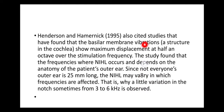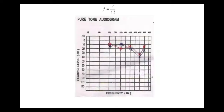But generally, in noise-induced hearing loss the dip is at 4k, whereas in otosclerosis the dip is at 2k. This is the 4k dip in noise-induced hearing loss, illustrated with the equation discussed earlier.